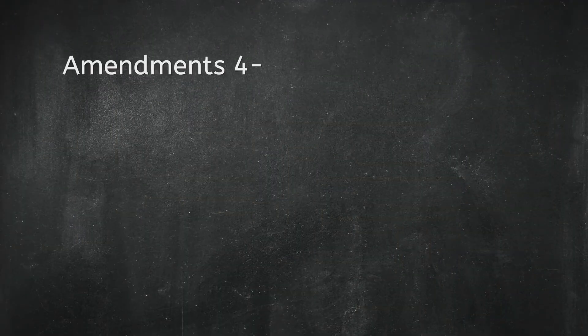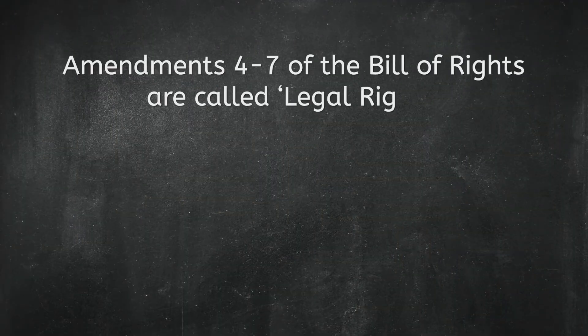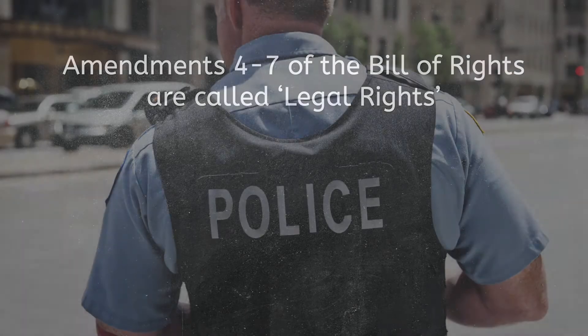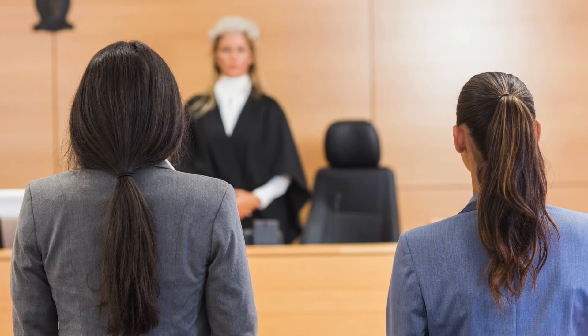Amendments 4 through 7 of the Bill of Rights are called legal rights. They restrict the police powers of the government and require due process to ensure innocence before court.